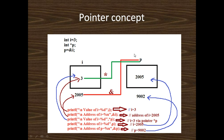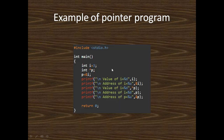Again, when we write &p, it means the address of p, which is 9002. So printf("%u", &p) prints 9002. This is a simple example: here i is an integer variable whose value is 3, p is an integer pointer, and we write p = &i, which means p stores the address of i.